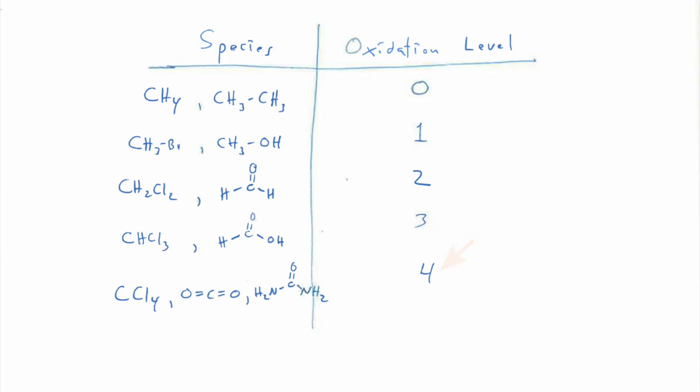Here I also have urea — a carbonyl bonded to two nitrogens — where that central carbon has four bonds to electronegative atoms, putting it in the fourth oxidation level. This is the synthetic way I'm going to approach redox chemistry for this course rather than using proper oxidation states, which are more complicated. If you're going up in oxidation level, you're oxidizing. If you're going down in oxidation level, you are reducing.